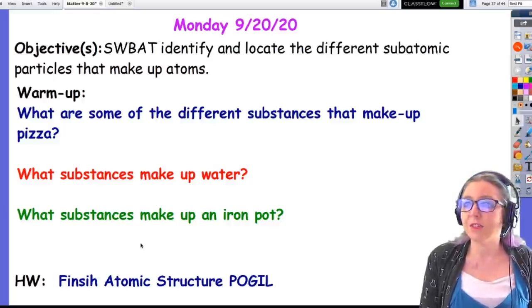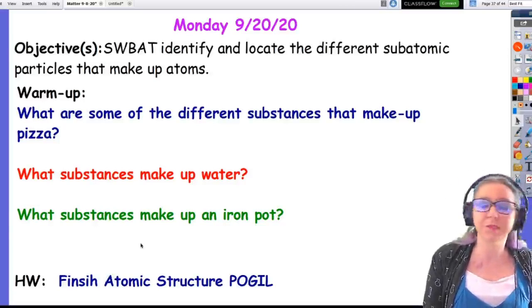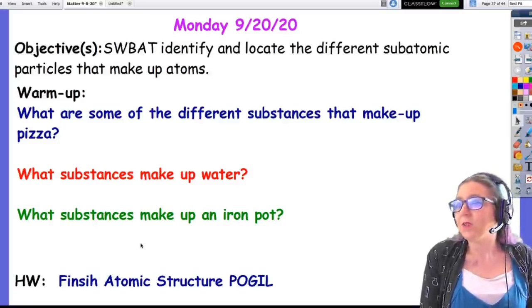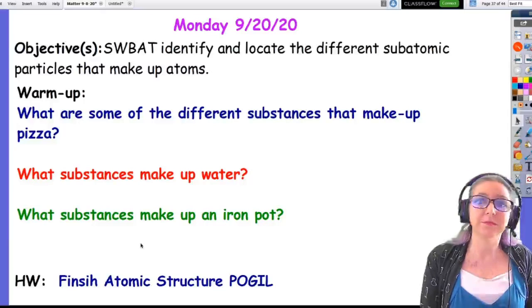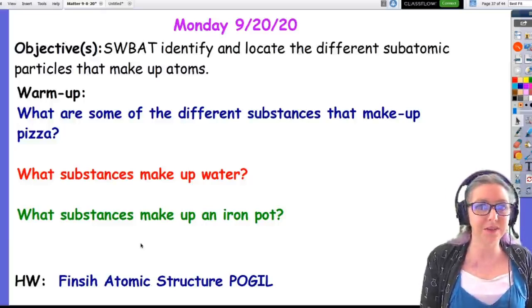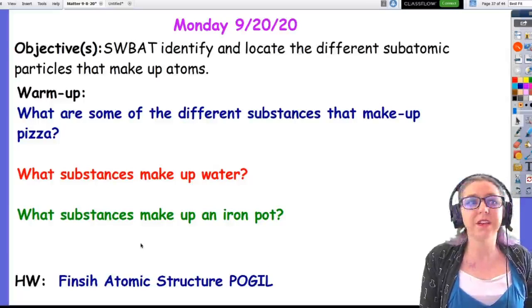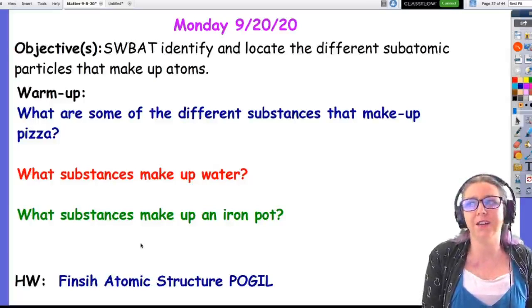A few students went a little bit further to say that there were two hydrogen atoms for every one oxygen atom, which was good. And then what substances make up an iron pot? We all agreed, iron. Some people clearly have slightly fancier iron pots at home that have more than just iron. But we could all agree that it all is based off of iron.